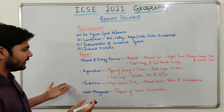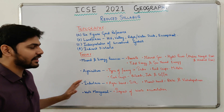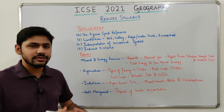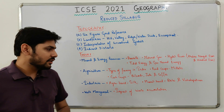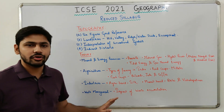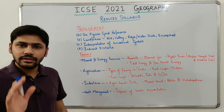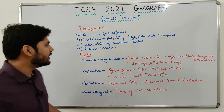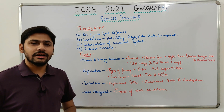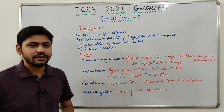It is safe to say you can skip everything mentioned in the theory reductions because each removed topic is individual with no connection between the theories. But for the topography part, I strongly suggest you still study all the conventional symbols. That was all regarding the reduced syllabus for the geography board exam.